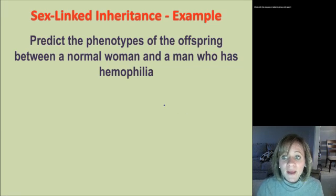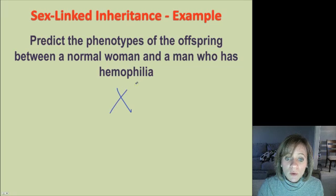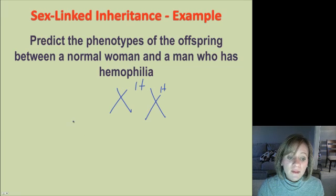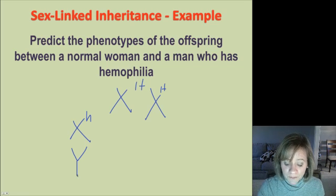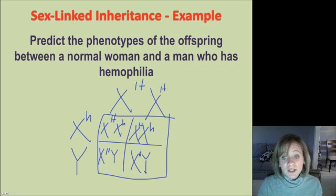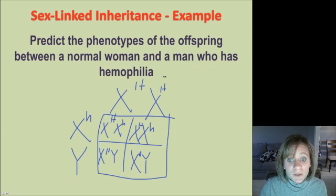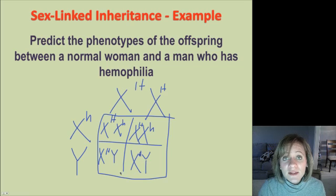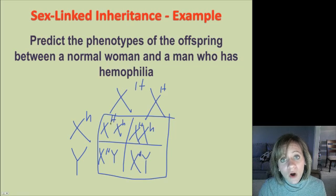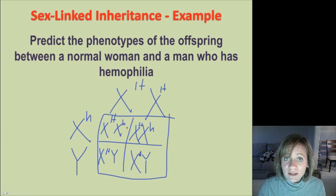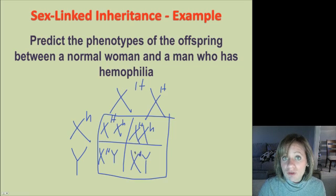Let's do one more together: a normal woman crossed with a man who has hemophilia. The normal woman is X^H X^H — she's not a carrier — and the man with hemophilia is X^h Y. All sons are normal because they get their X from the mother, who has two big H's. But all daughters become carriers because they get one X from the father, who has that little h. All offspring are phenotypically normal and do not have hemophilia.